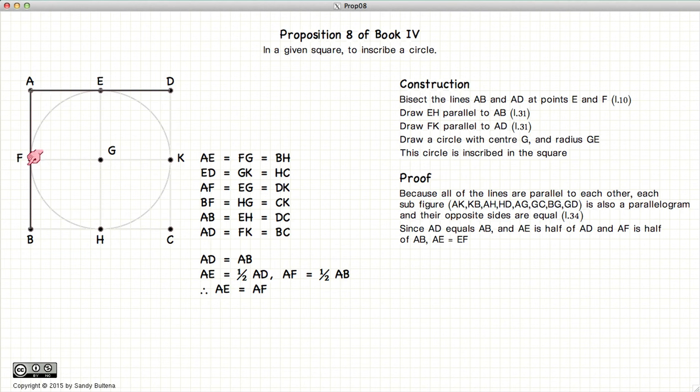And since E and F bisect the sides of the square, AE is equal to AF.